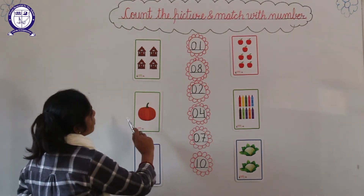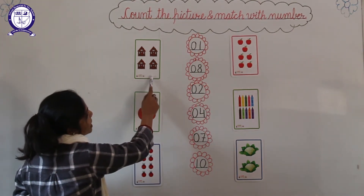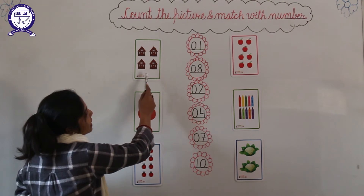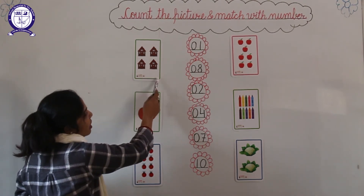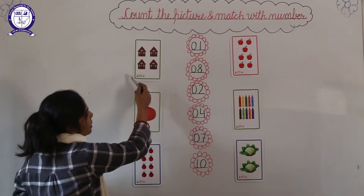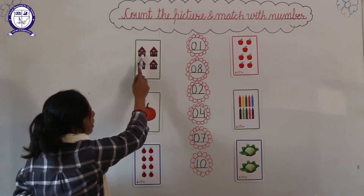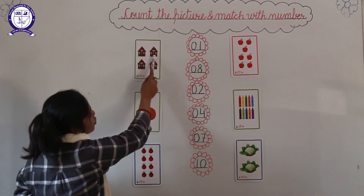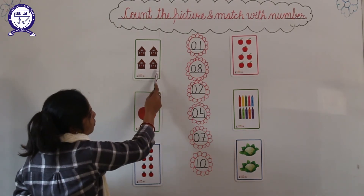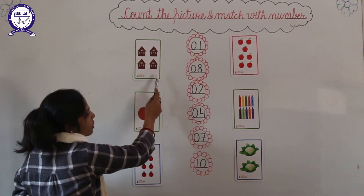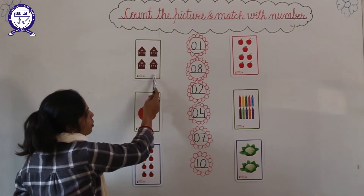Look at the board everyone. Look here — which picture is this? These are hearts. How many hearts are there? Count them: 1, 2, 3, 4. There are 4 hearts.